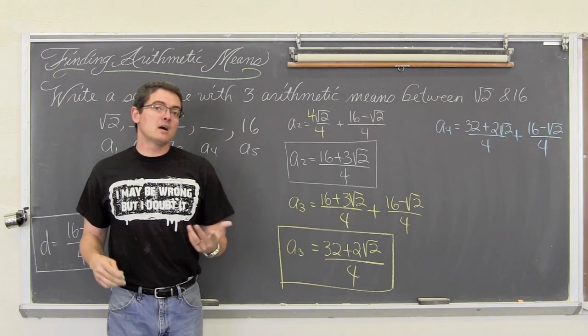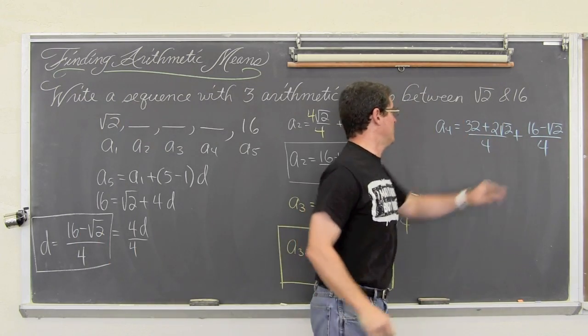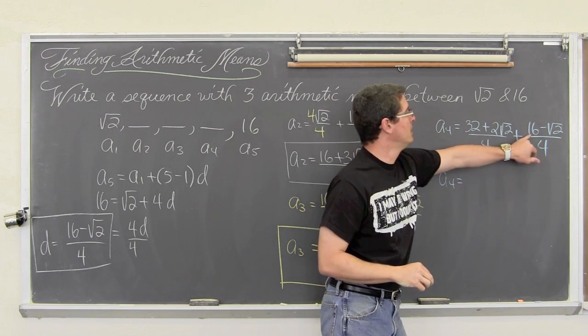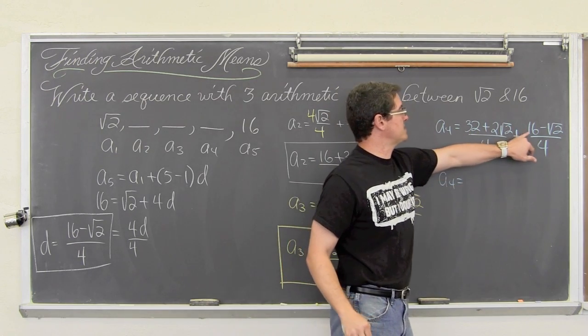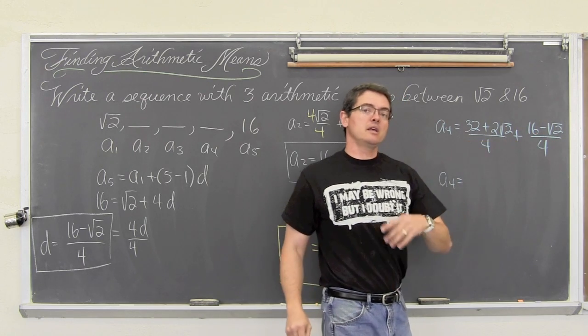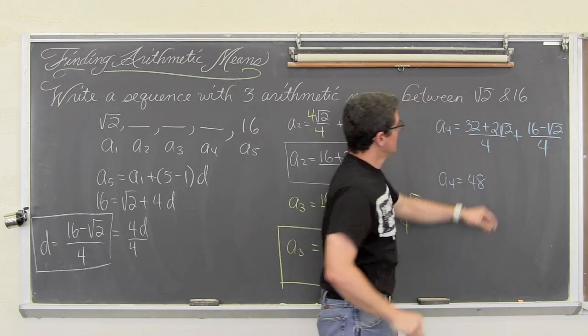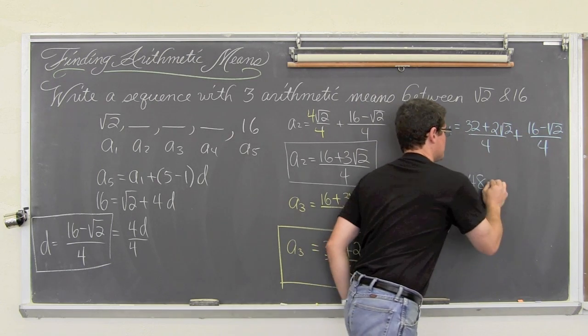We already have common denominators, so we are going to keep those and get a sub 4 is equal to 32 plus 16. Now 32 and 10 is 42, another 6 is 48.